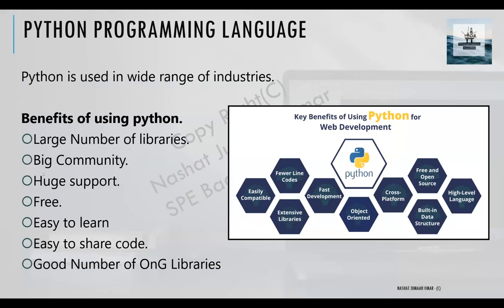For example, if you are having a problem deploying a specific feature in Python, you can just go ahead and ask on the internet and you will find thousands of answers. That's the benefit of having a big community. Plus, there is huge support from the founders of Python itself — we are getting constant updates and constant new features being added to Python.